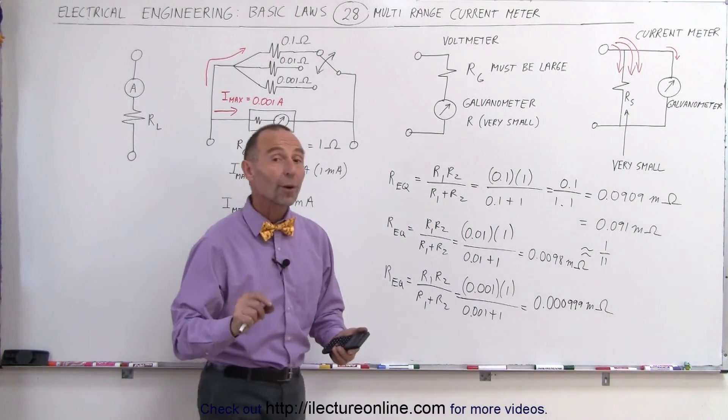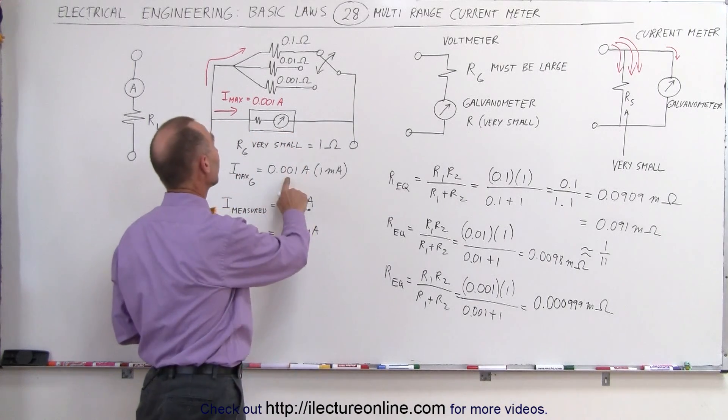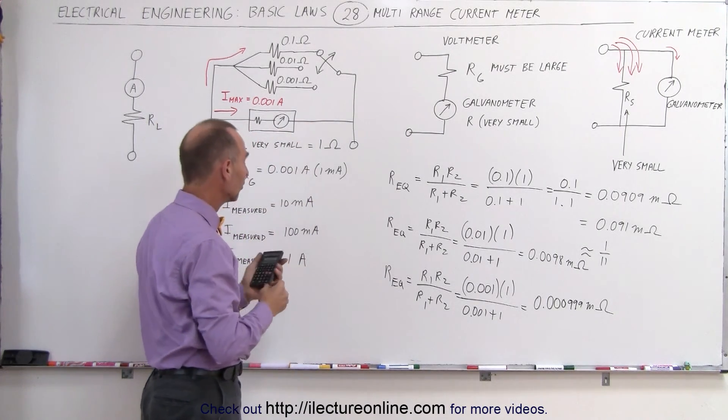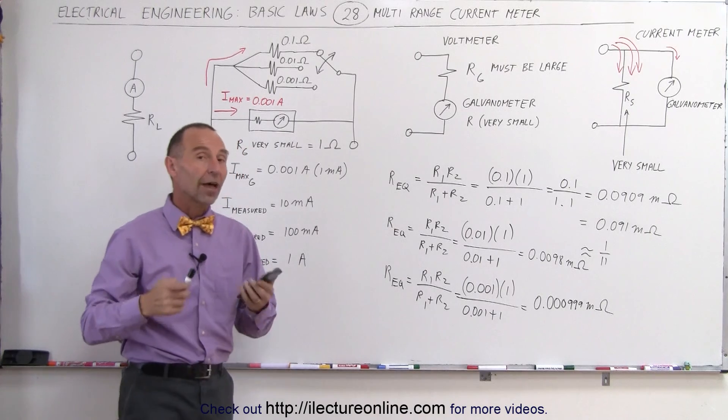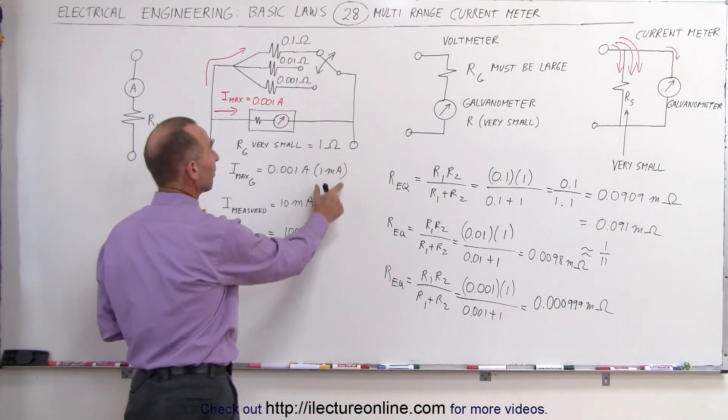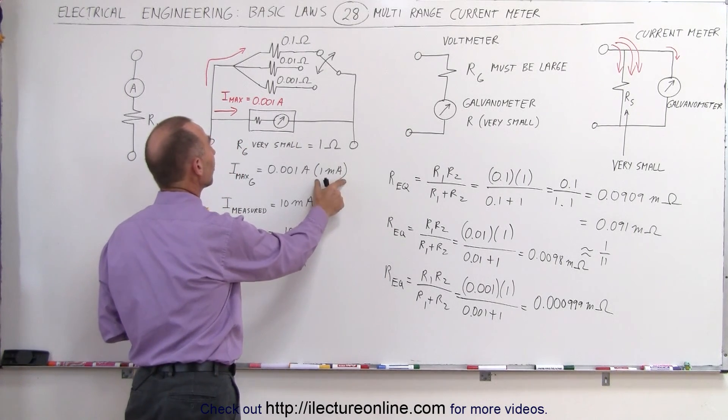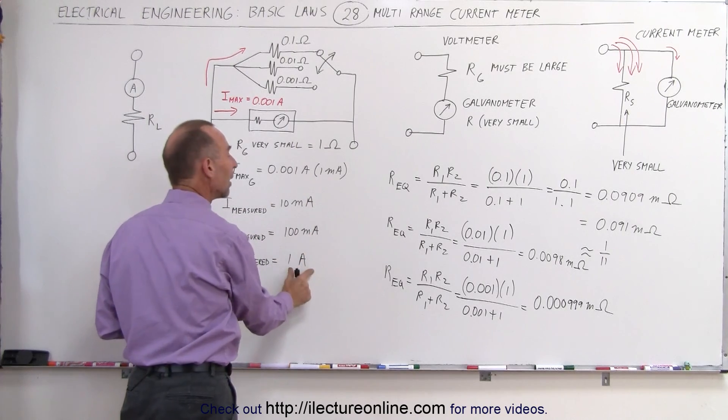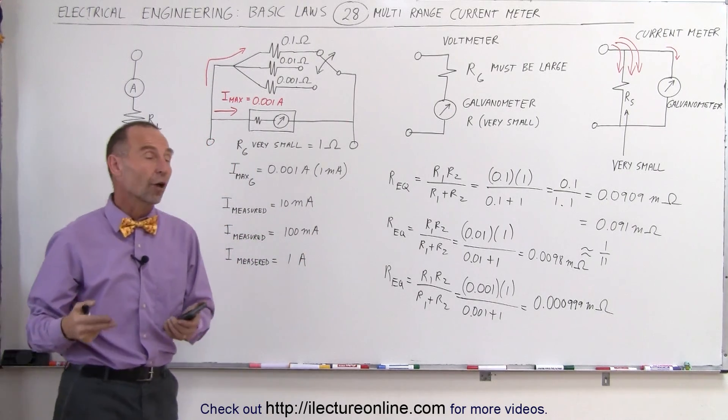In other words, it's very close to 1/1000th the resistance of the galvanometer, the equivalent resistance, therefore you can handle 1000 times as much current, so instead of having a 1 milliamp limit for the galvanometer, you now have a 1-amp limit, and therefore you can measure current up to 1 amp.